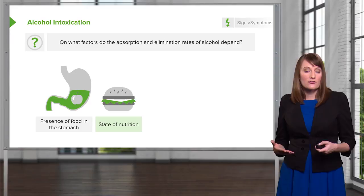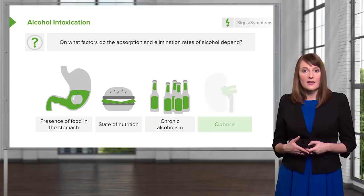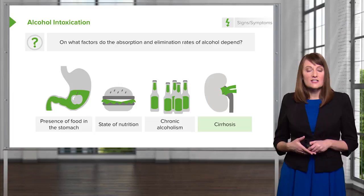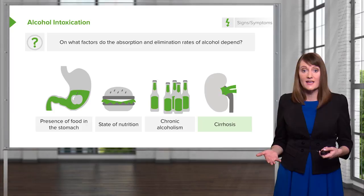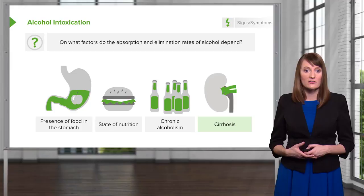Other factors include the presence of food in the stomach, state of nutrition, chronic alcoholism, and also whether or not there is any cirrhosis of the liver. So if somebody is drinking on an empty stomach, already has poor nutritional status, tends to drink every day, and their liver is negatively impacted, they're not going to be able to metabolize or eliminate alcohol very quickly.